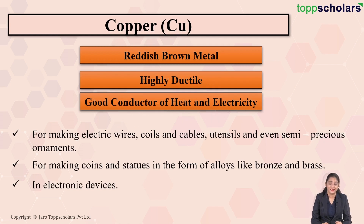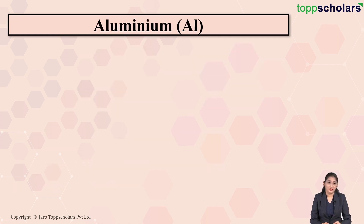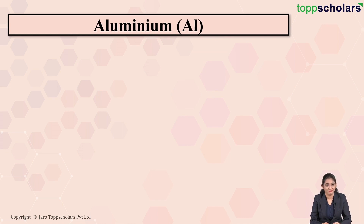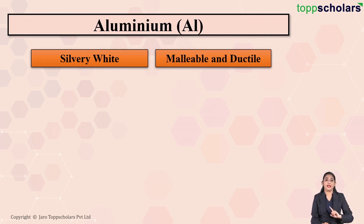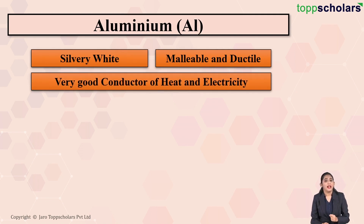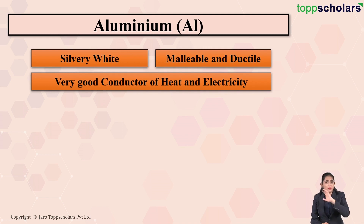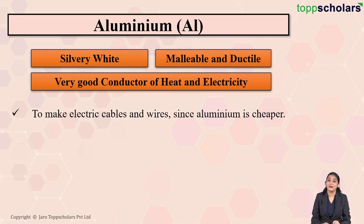Now let's move on to aluminium. Aluminium is the second most abundant metal after iron, and it is a silvery white metal. Aluminium is malleable as well as ductile — we can make sheets and wires of aluminium. Aluminium is also a very good conductor of heat and electricity. Because of these properties, aluminium is used for making electrical cables and wires.